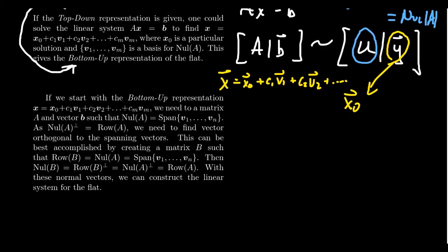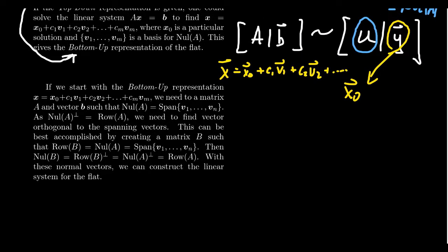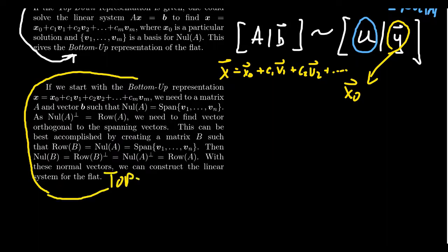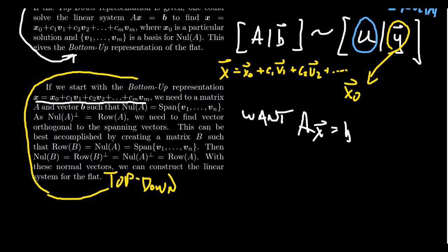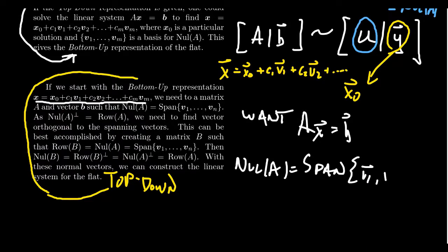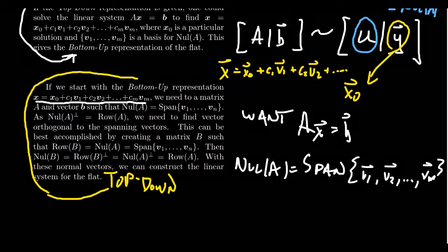What I want to talk about is what happens if we start off with the bottom-up approach and we want to switch it to the top-down approach. That is, what if we have the parametric equations for some flat — can we come up with a system of linear equations? We start with x = x0 + c1*v1 + c2*v2 + ... + cm*vm. We want to find Ax = b. The thing we know about A is that its null space span is given — we have the basis for A's null space from the spanning vectors. Can we build A from that?